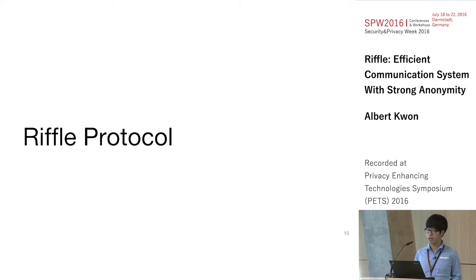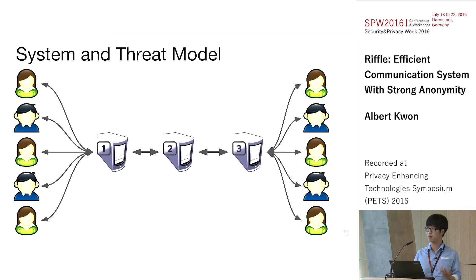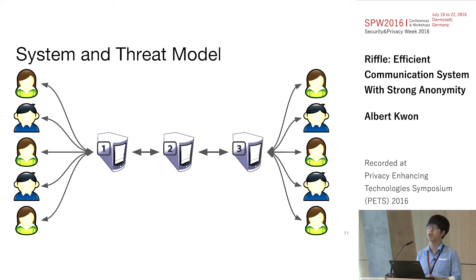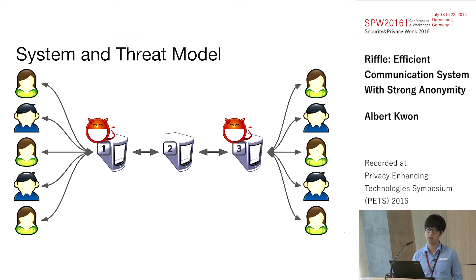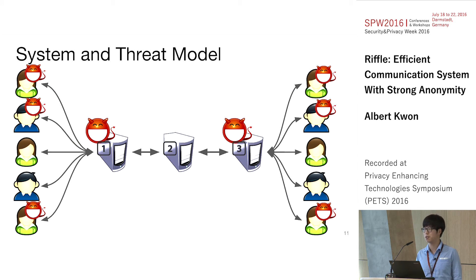The Riffle protocol aims to solve these two problems without sacrificing security. The model is similar to Mixnets: a handful of servers collectively act as an anonymity provider, with many clients wishing to communicate anonymously. We allow all but one server to be malicious — the identity of the honest server need not be known, just its guaranteed existence — and any number of clients to be malicious, with the goal of providing anonymity among all honest clients.